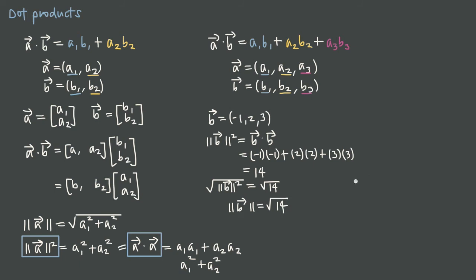The dot product has a set of properties. First, the dot product is commutative. This makes sense because when we expressed vectors as matrices, we could multiply A by B or B by A. Looking at the original formula, even if we flip B and A, we're still multiplying A1·B1 and A2·B2 and adding them up — the same as B1·A1 + B2·A2, which gives the same value. So the dot product is commutative.